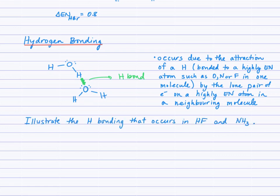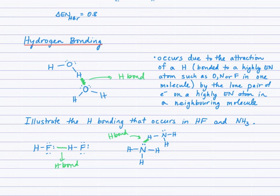Drawing two HF molecules illustrates an attraction between the hydrogen in one molecule — directly bonded to fluorine — and the lone pair of electrons on the fluorine in a neighboring molecule. Similarly for ammonia, NH3: with two ammonia molecules drawn, the lone pair on one nitrogen attracts the hydrogen that is directly bonded to a nitrogen in the adjacent molecule.